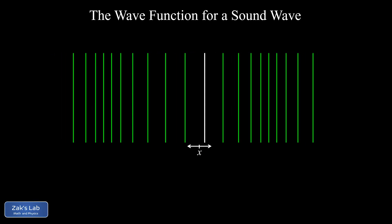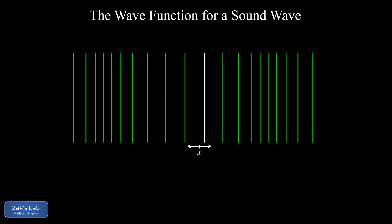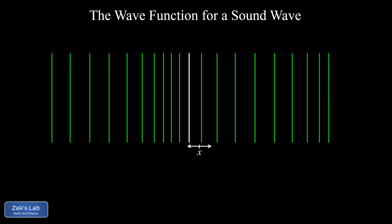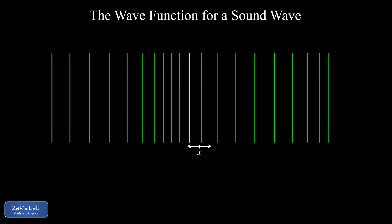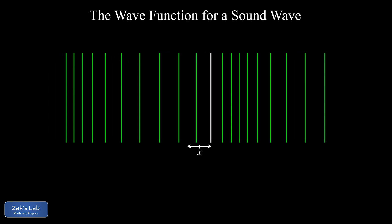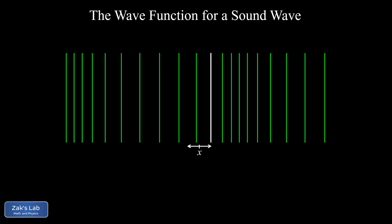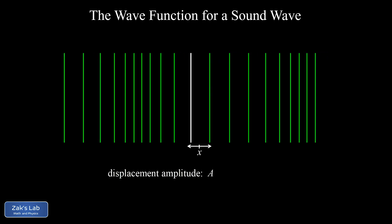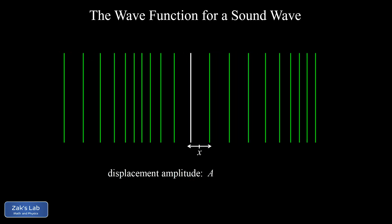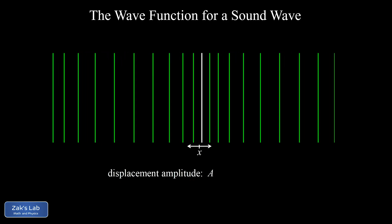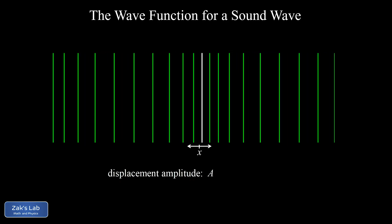We've highlighted one particular line of air molecules in this animation, and we see that it moves back and forth sinusoidally as the longitudinal wave passes through. The amplitude of that oscillation is called the displacement amplitude at that particular value of x, where x is the equilibrium position of that white line. The displacement amplitude A is half the width of the double arrow in the picture — the distance from the equilibrium position x to either one of the extreme positions of the white line, left or right of equilibrium.